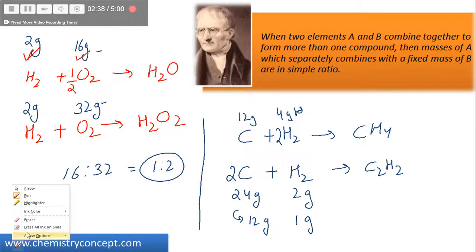Now doing this, what I know is that the mass of carbon is now fixed. If it was 12g, then the mass of hydrogen is 4 is to 1, again it's a simple ratio. Okay, this was the law of multiple proportions.